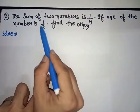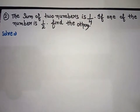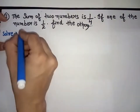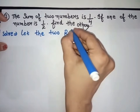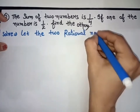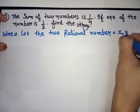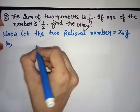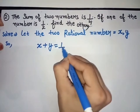We need to find the other number. First, let us use variables. Let the two numbers be x and y. So we write: x plus y equals 1 over 4. Now, one of the numbers is given as 1 over 2, which means x equals 1 over 2. We substitute x's value: 1 over 2 plus y equals 1 over 4.